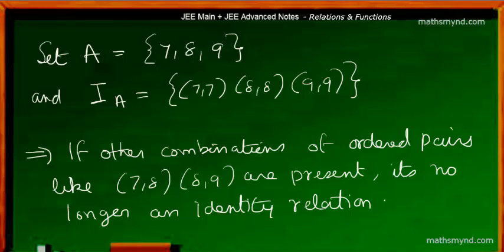we have three ordered pairs: (7,7), (8,8), (9,9). You don't have any combinations like (7,8) or (8,9) or (9,8) - such a thing is not coming up.